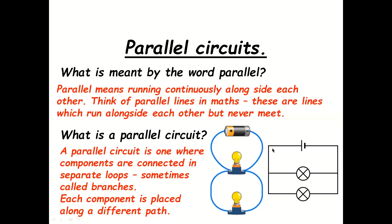In a series circuit, all the components are connected in a single loop. In a parallel circuit, there is more than one loop — more than one path the current can flow through. So a parallel circuit is one where components are connected in separate loops. In a series circuit the current has only one option; in a parallel circuit the current has options and each component is placed along a different path.